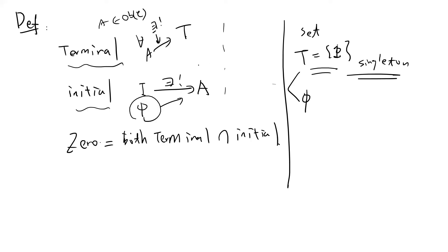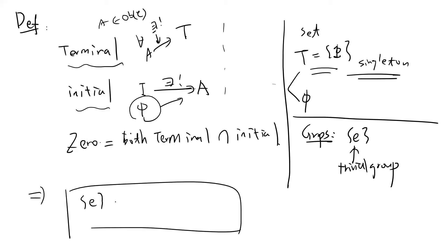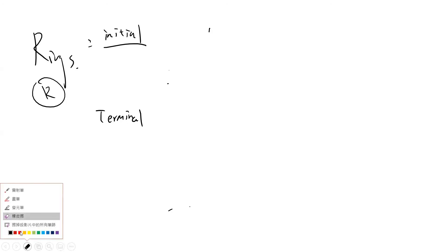In the category of Groups, the trivial group is the zero object. It is the terminal object because all group elements must map to the identity, and morphisms in the groups category must be homomorphisms which must map identity to identity.